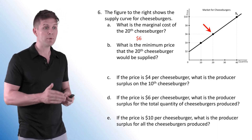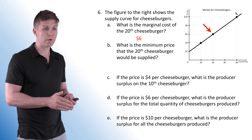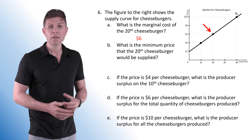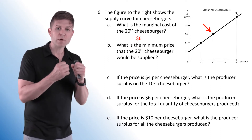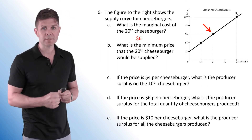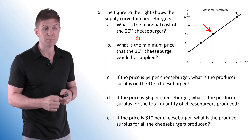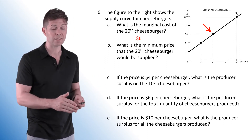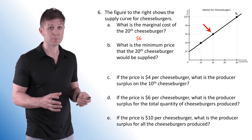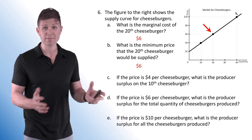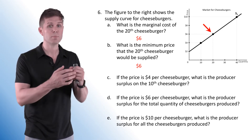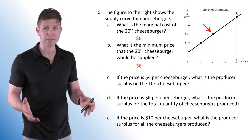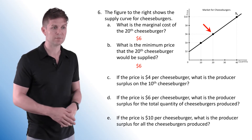Question B: what is the minimum price of the 20th cheeseburger that would be supplied? Since his marginal cost at the 20th cheeseburger is $6, the least he's willing to supply it at is $6. Otherwise, his marginal benefit would be less than his marginal cost, and it wouldn't make sense for him to make that decision — the price has to at least equal his marginal cost.